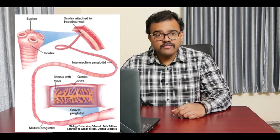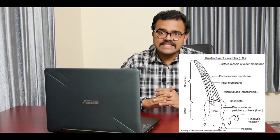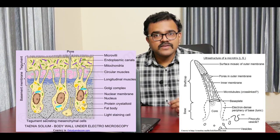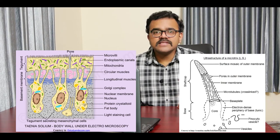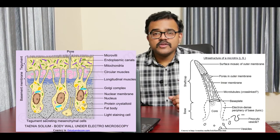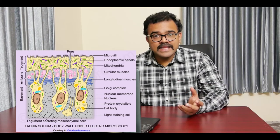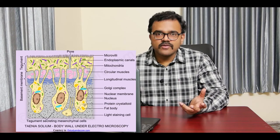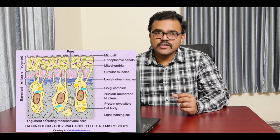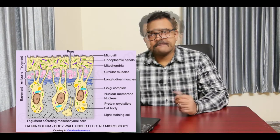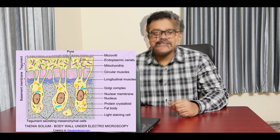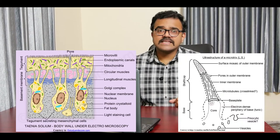The body wall or tegument of Taenia solium is a metabolically active layer. The outer plasma membrane of the tegument is thrown into specialized microvilli with dense spiny tips called microtriches. Below this is a syncytial cytoplasm containing numerous mitochondria, organelles, vacuoles, and vesicles. The cell bodies are seen deep inside the body wall, with cytoplasmic extensions into the outer layer. Between the outer and inner layers, circular and longitudinal muscles are seen. Since the parasite does not have a gut, the tegument acts as an absorptive surface.